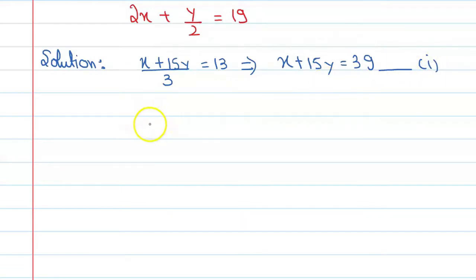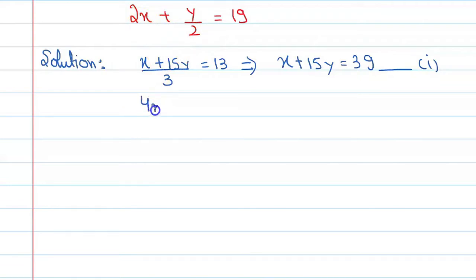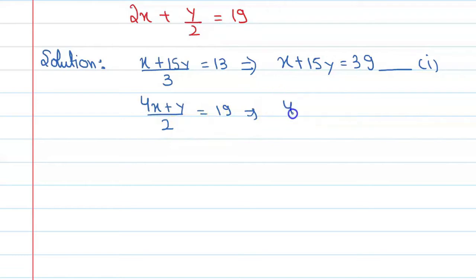Similarly, for the next equation, we multiply by 2, so we get 4x plus y upon 2 equal to 19. Then multiplying through by 2, the equation becomes 4x plus y equal to 38. This is equation number 2.